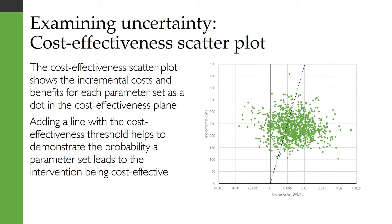In terms of presenting the results of a PSA graphically, one option is the cost-effectiveness scatter plot. This shows the incremental costs and benefits for each parameter set as a dot in the cost-effectiveness plane. Adding a line with the cost-effectiveness threshold — for example, $50,000 per QALY — helps to demonstrate the probability a parameter set leads to the intervention being cost-effective. If the parameter set leads to a dot to the southeast of the dashed line, the intervention is cost-effective, whereas if it is to the northwest, the intervention is not cost-effective.